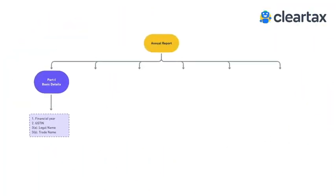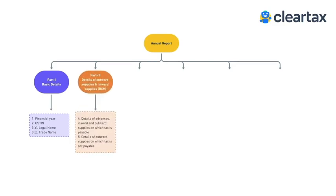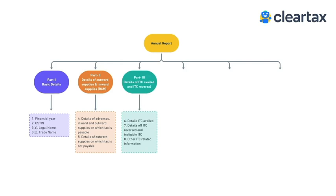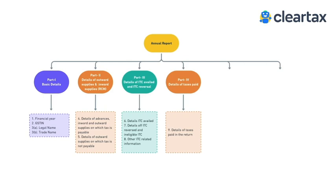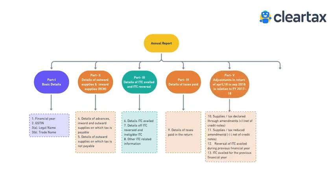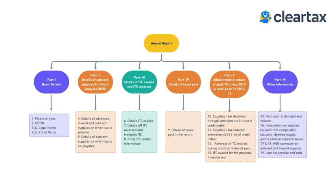GSTR 9 has a total of 6 parts. Part 1 contains basic details. Part 2 covers outward and inward supplies liable to tax — essentially the liability to be discharged. Part 3 covers ITC details and reversals. Part 4 covers taxes paid. Part 5 covers amendments or additions made in the next year but related to the current financial year. Part 6 covers other information like demands and refunds.